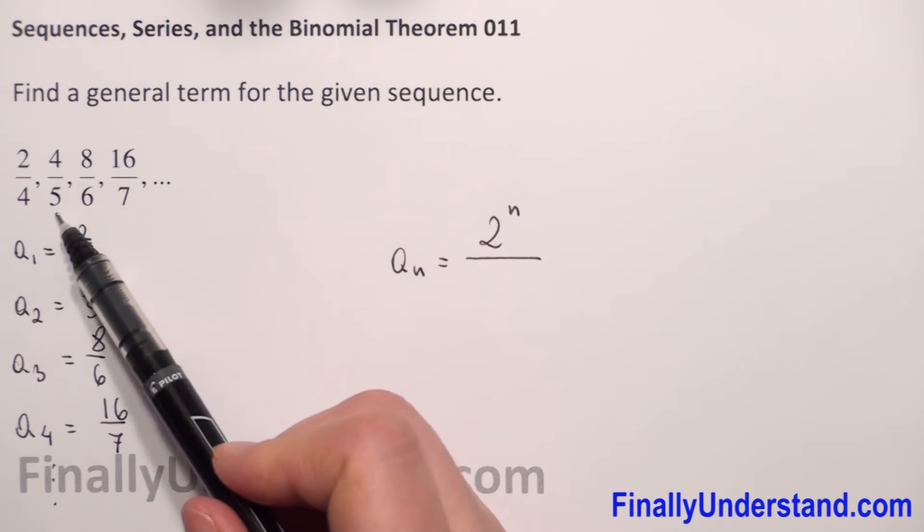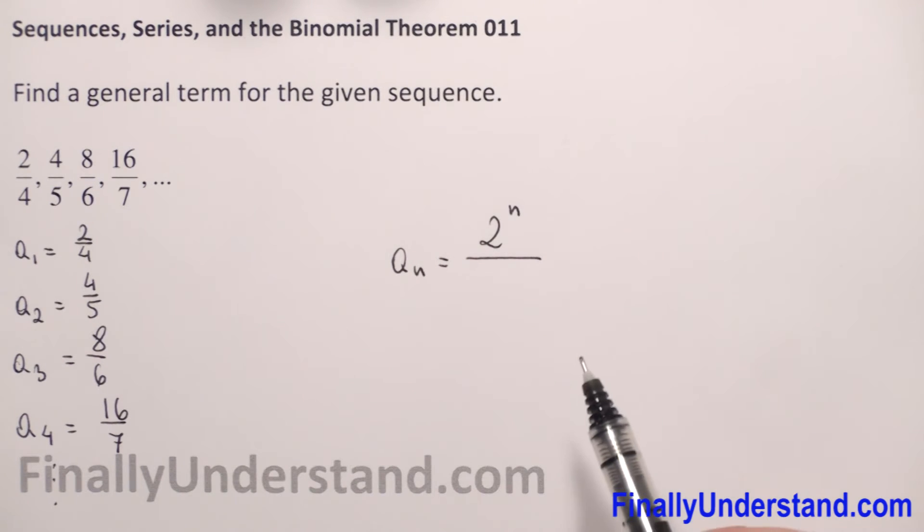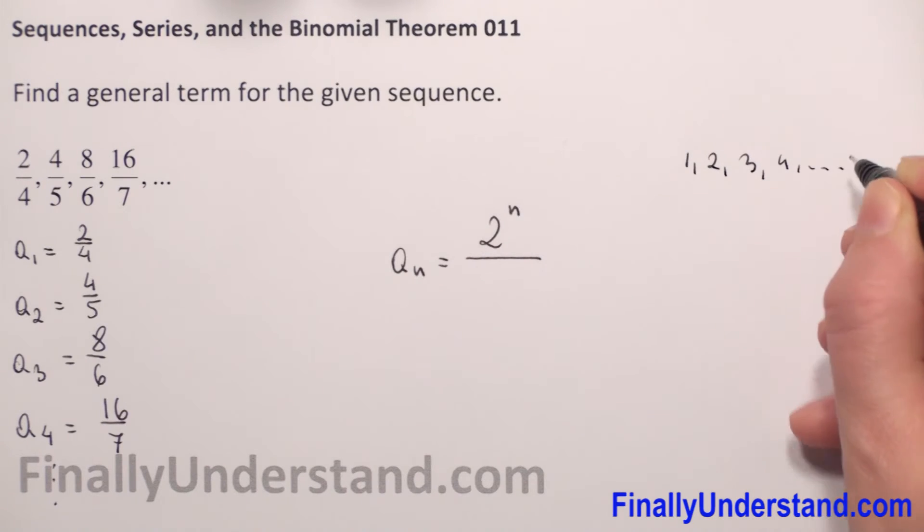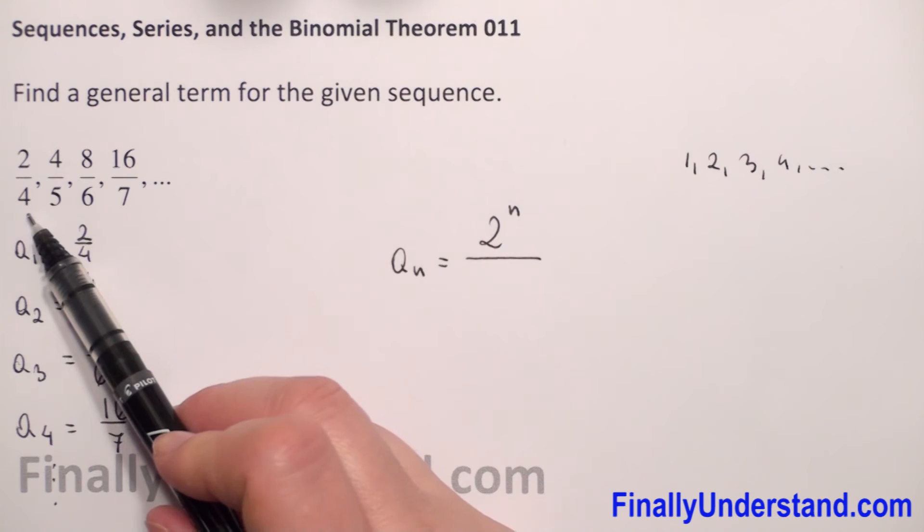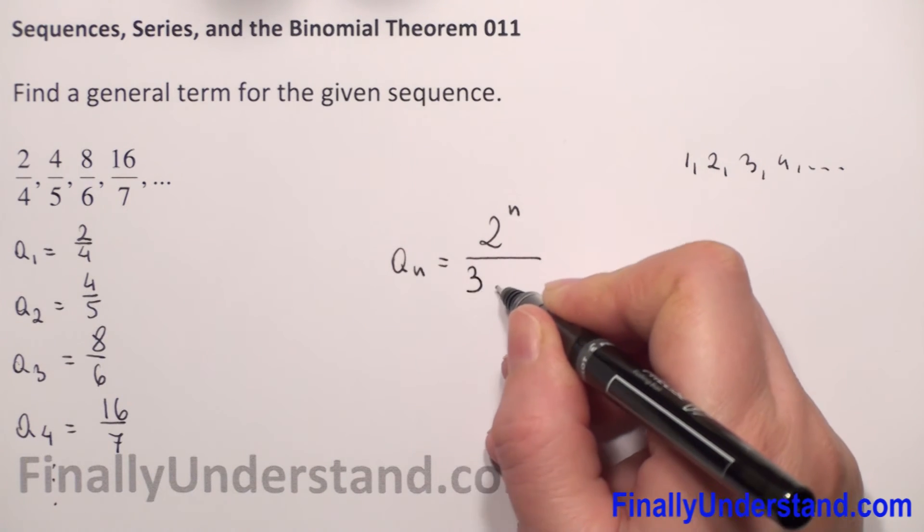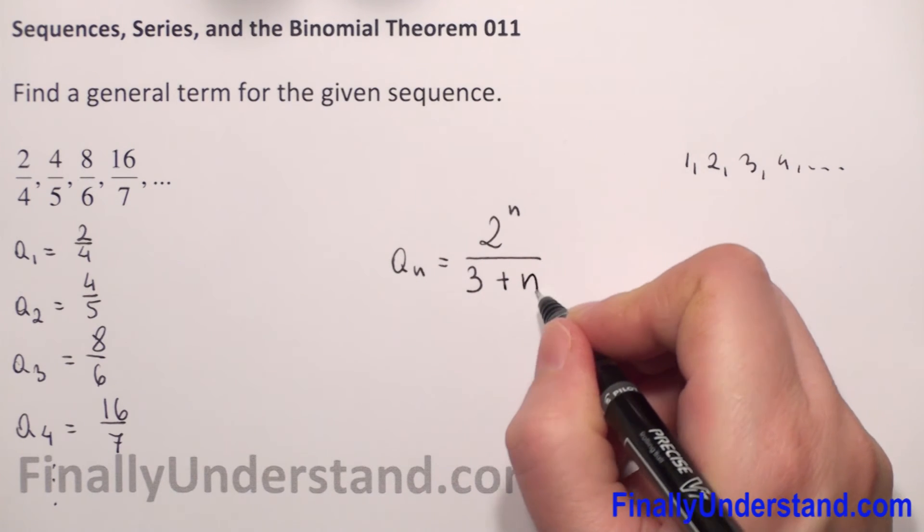And what about our denominator? We have 4, 5, 6, 7. We have here a sequence. The sequence is a function whose domain consists of positive integers: 1, 2, 3, 4, and so on. In our example, our denominator is 4, 5, 6, 7. We start from 4, so if I write n it will be wrong, because when we substitute n by 1, we need to have 4. So to get 4, I will write that we have 3 plus n.